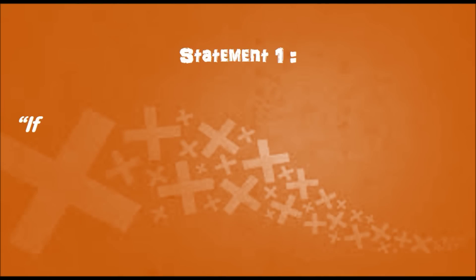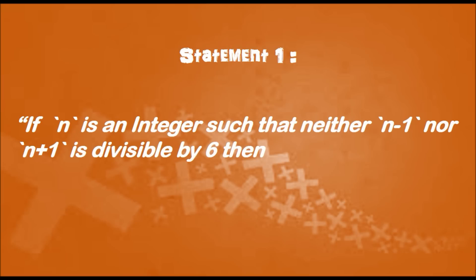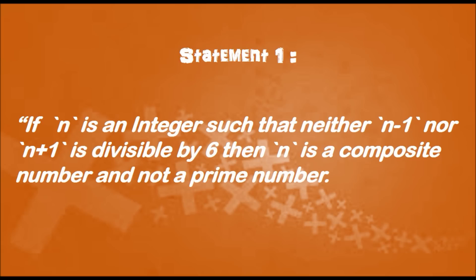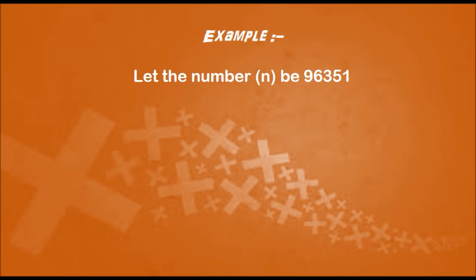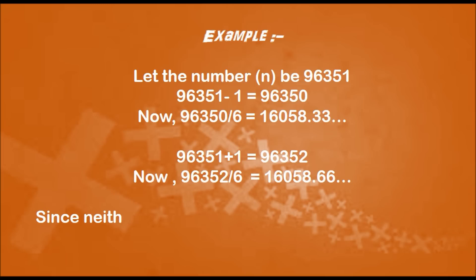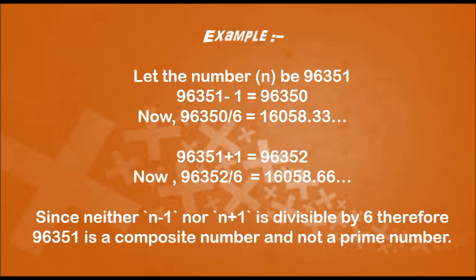Statement 1: If n is an integer such that neither n-1 nor n+1 is divisible by 6, then n is a composite number and not a prime number. Example: Let the number n be 96351. 96351 minus 1 gives us 96350; dividing by 6 gives a decimal number. Adding 1 to n and dividing by 6 also gives a decimal number. Since neither n-1 nor n+1 is divisible by 6, n is a composite number.